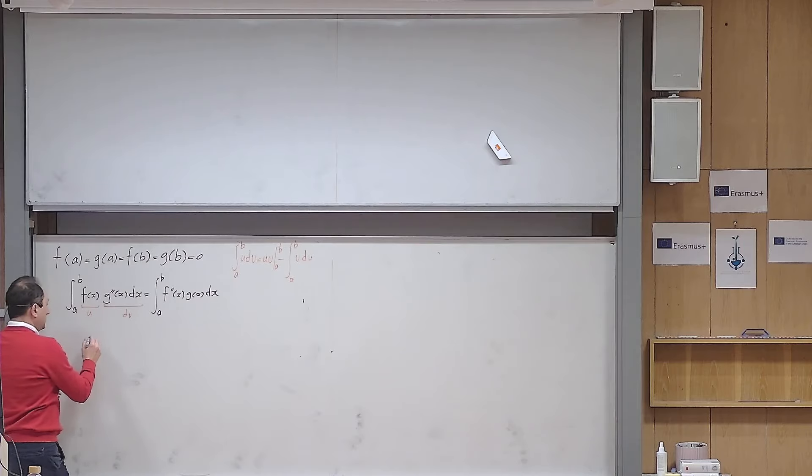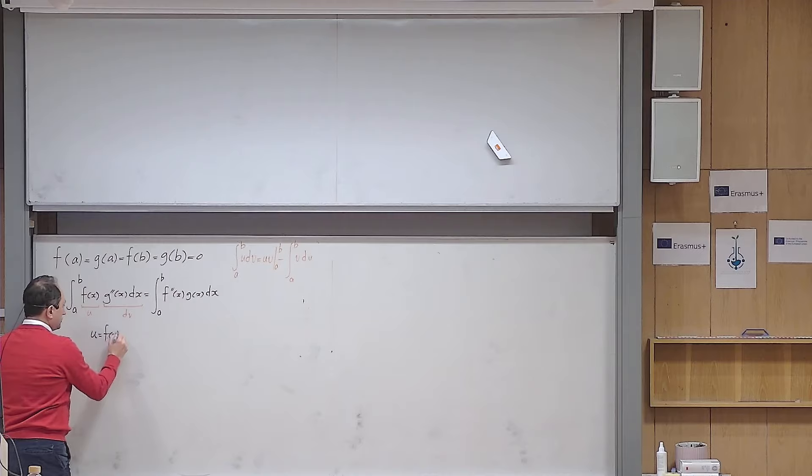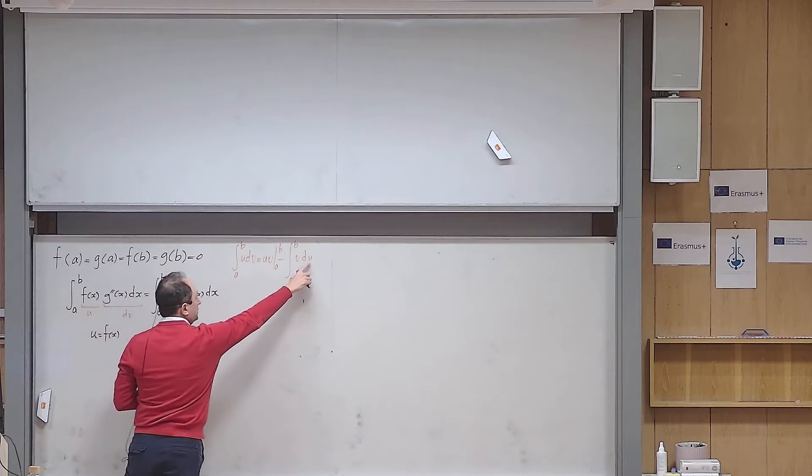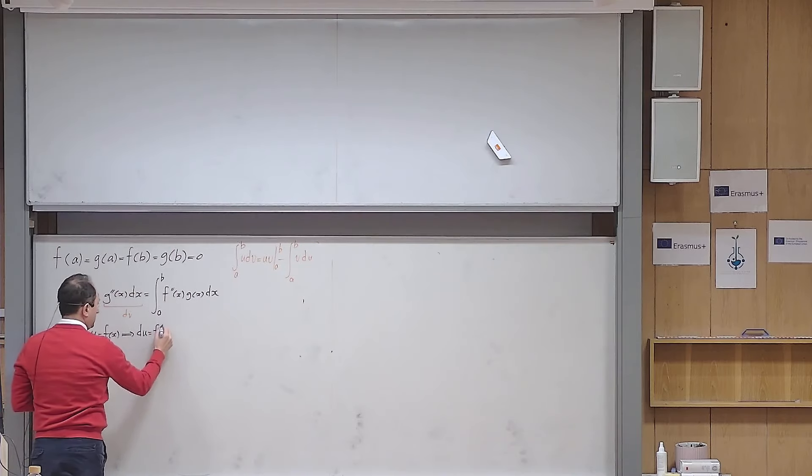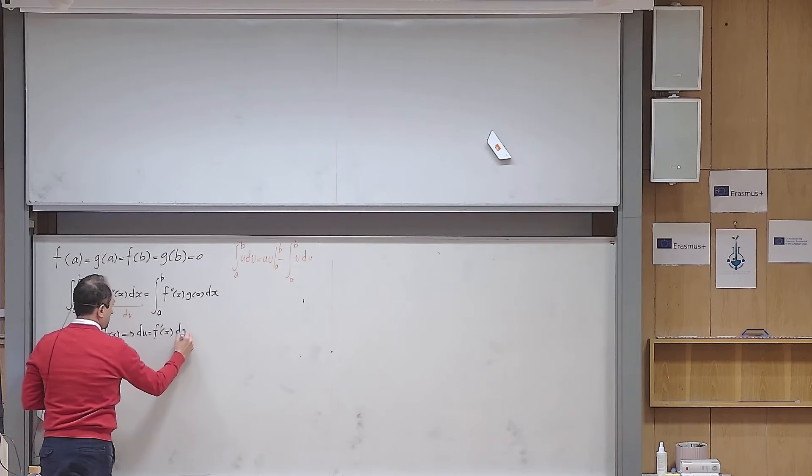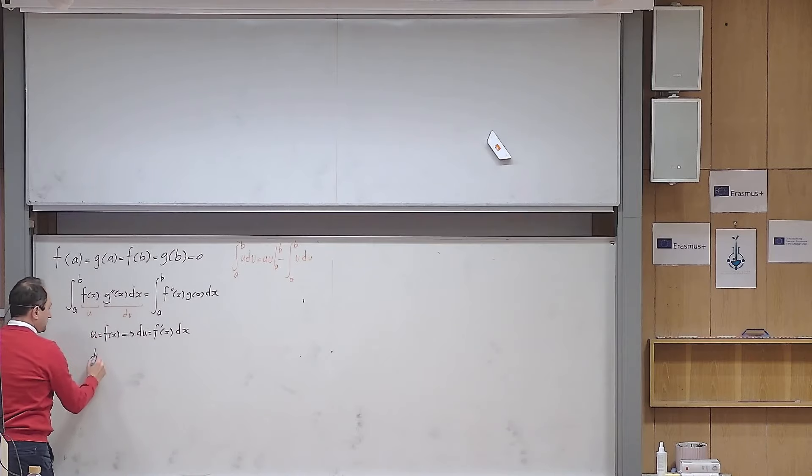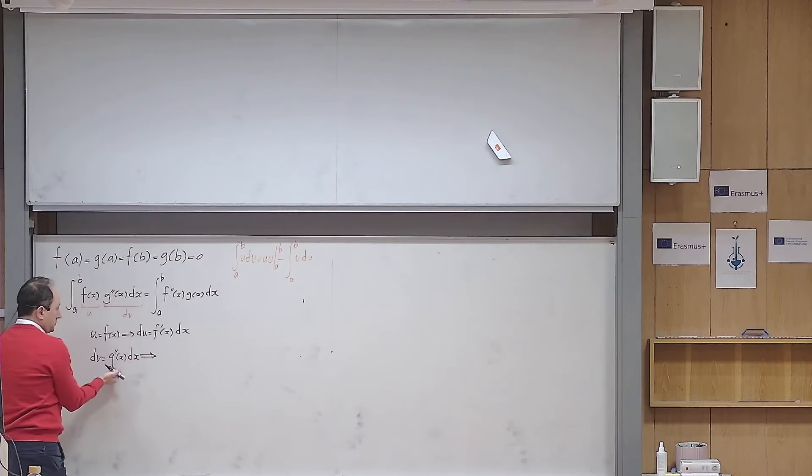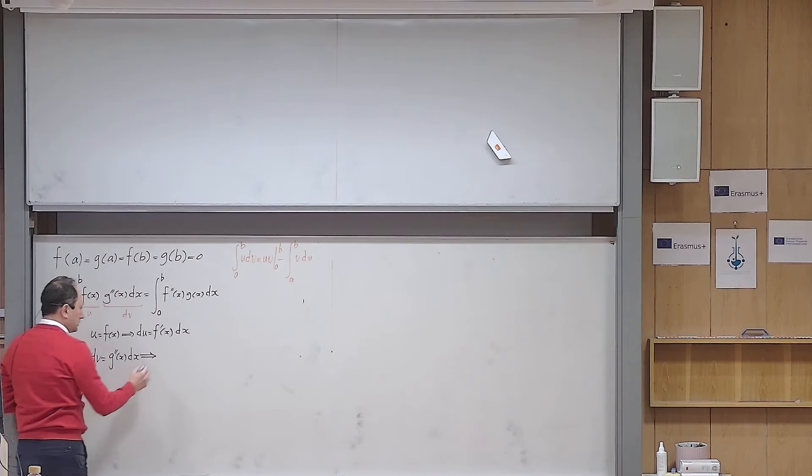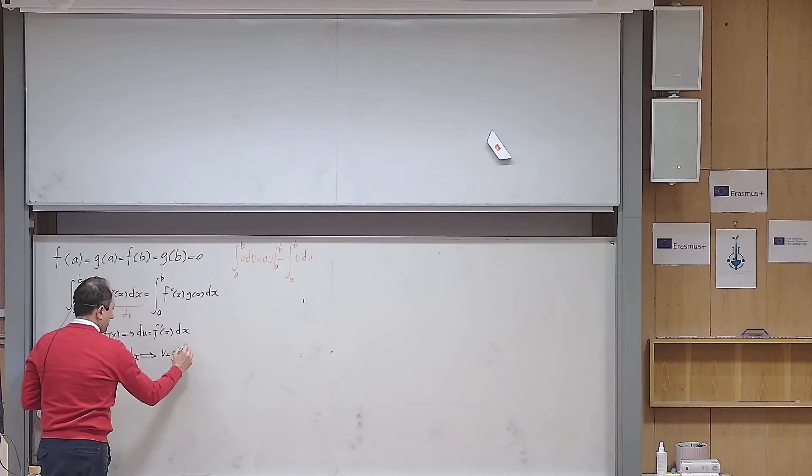So I would say that u is equal to f(x). So for using integration by parts formula, I also need du, which appears here, and I also need v. So from here, I calculate du, which means differentiate this function, which will give me f'(x) and then multiply it by dx. And then I will take this one to be dv. And I need to find v. So v is any primitive function of g''. The primitive function for g'' is simply g'.